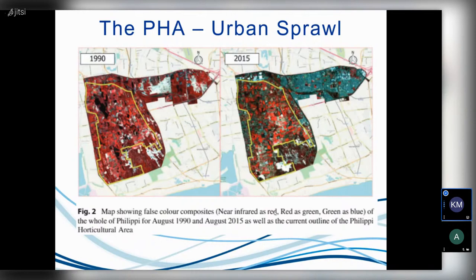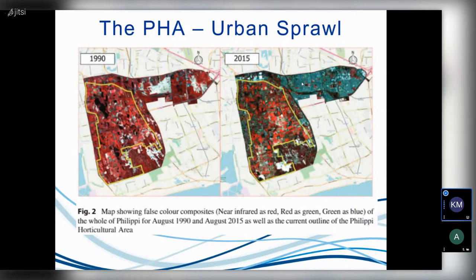The darker red would be natural growing vegetation like bushes over rocks. On the right-hand image, what appears blue-greenish is urban growth — a built-up area within the PHA. You will see in 1990 there was a lot more agricultural activity, and in 2015 you can see there's been increased urbanization. So over 25 years, there has been significant growth in urban land cover within the PHA.